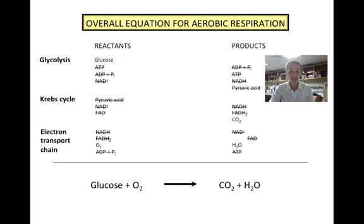We're going to start off this presentation with the last slide from the presentation on aerobic respiration. When we added up the reactants and the products from the three stages of aerobic respiration and then cancelled everything that appeared as both a reactant and a product, we got the net equation for aerobic respiration, which was glucose and oxygen yields carbon dioxide and water.